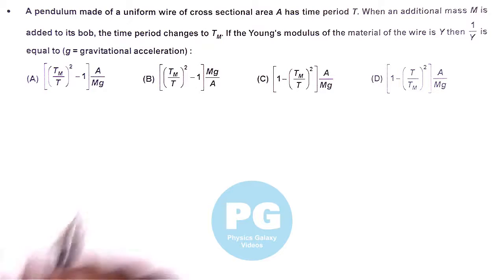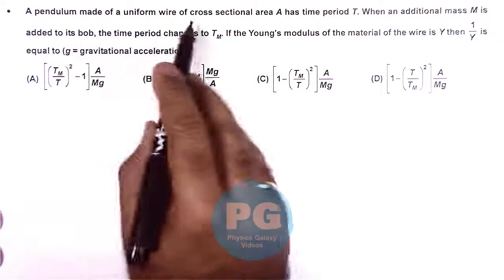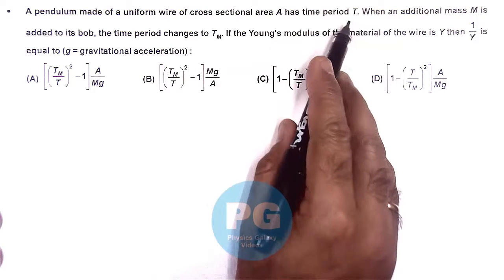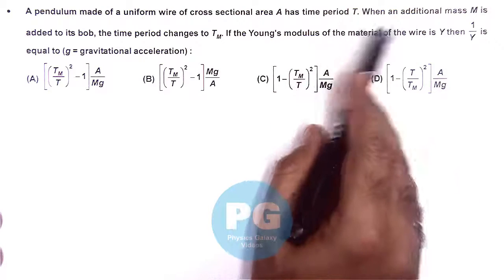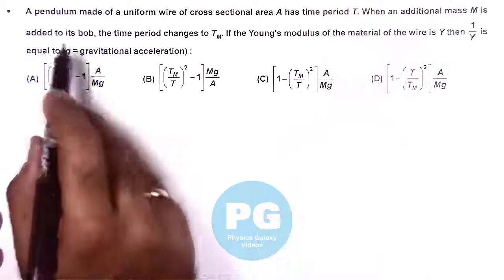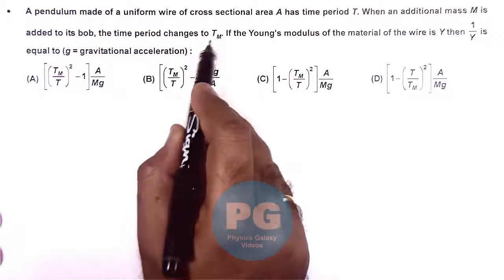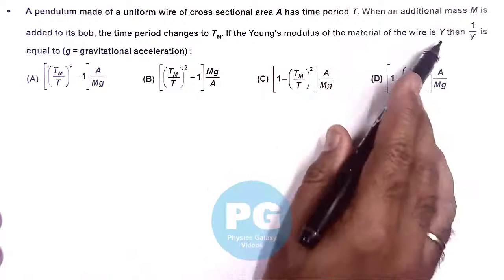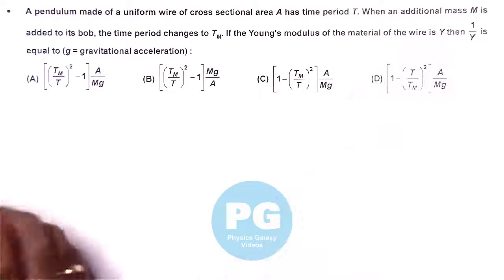In this question, we are given that a pendulum made of a uniform wire of cross-sectional area A has a time period T. When an additional mass M is added to its bob, the time period changes to Tm. If the Young's modulus of the wire is Y, then we are required to find the value of 1/Y.